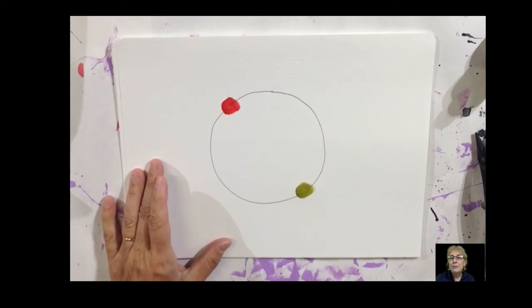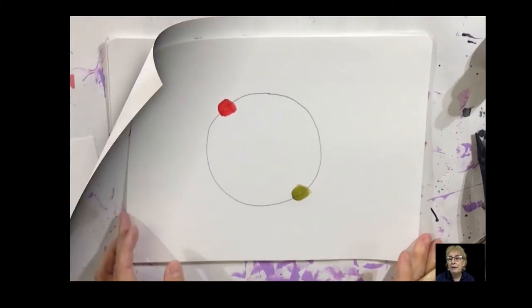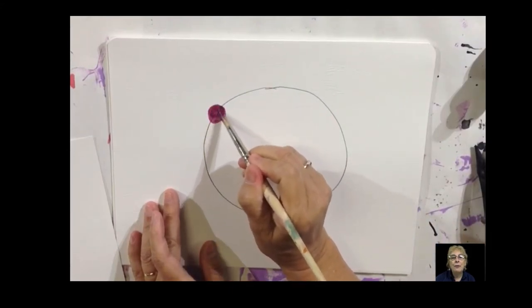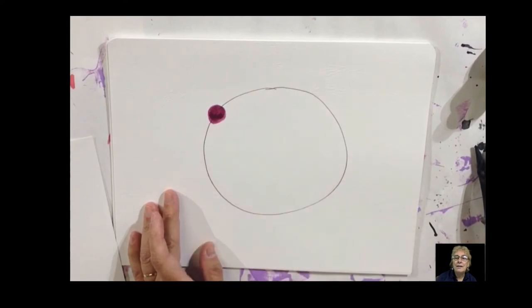So those are color combinations that are very popular. Here's another one. If you have purple on one side in your painting, you should make sure that you have the color yellow, or a little bit of yellow orange in your painting.